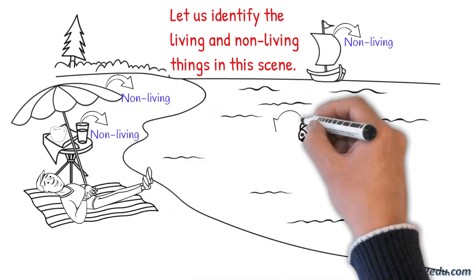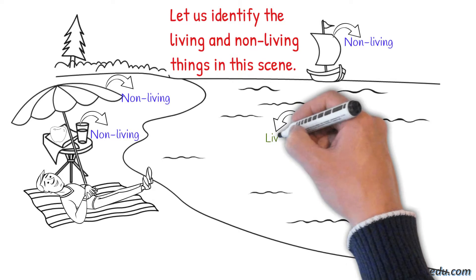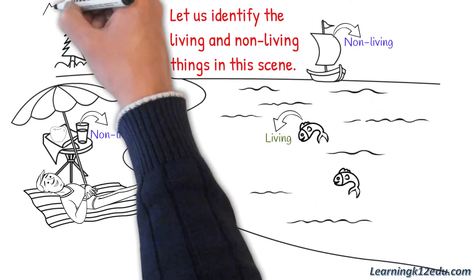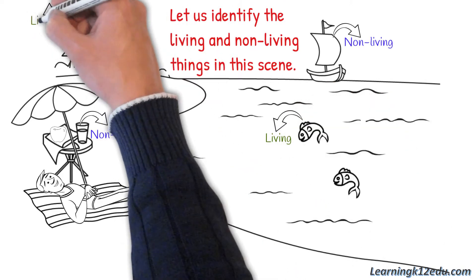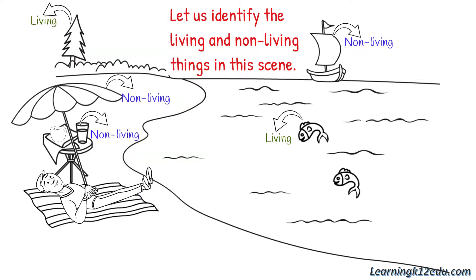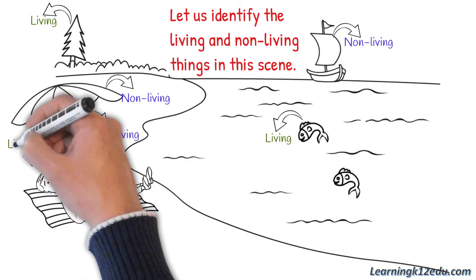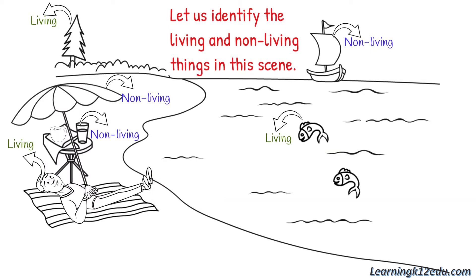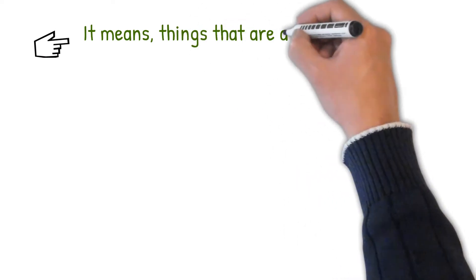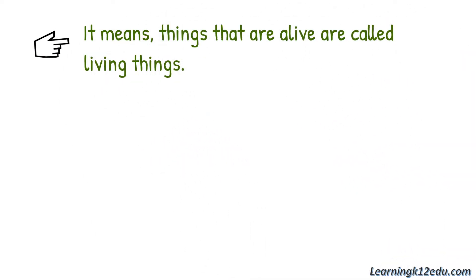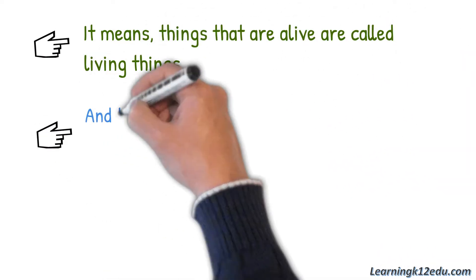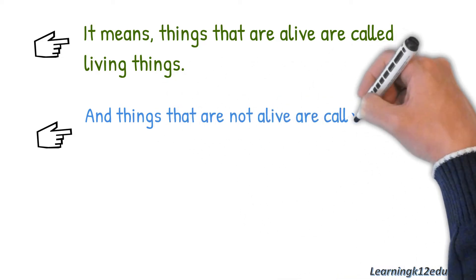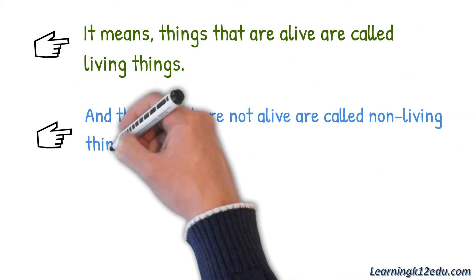Yes, the boat, umbrella, and glass are non-living things, and the fishes, trees, and of course Mr. Steve are living things. It means things that are alive are called living things, and things that are not alive are known as non-living things.